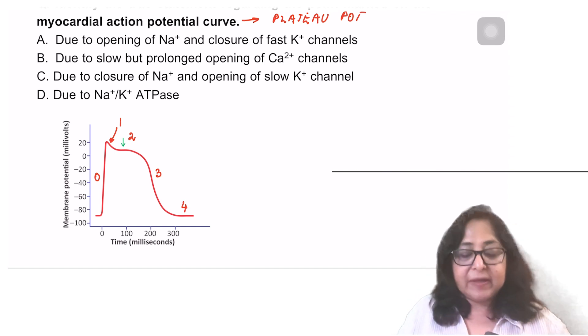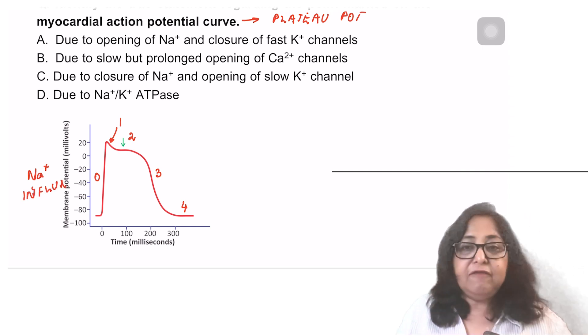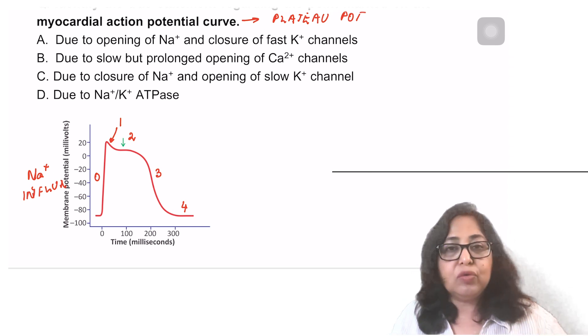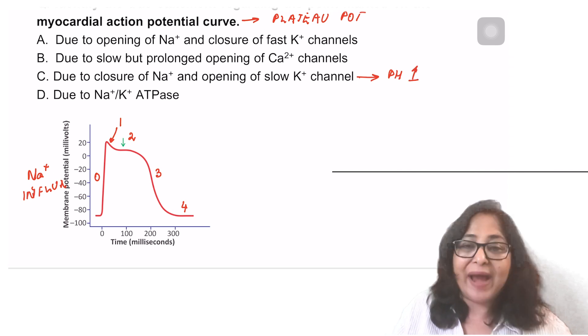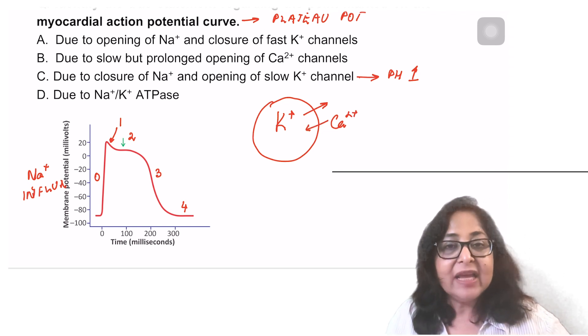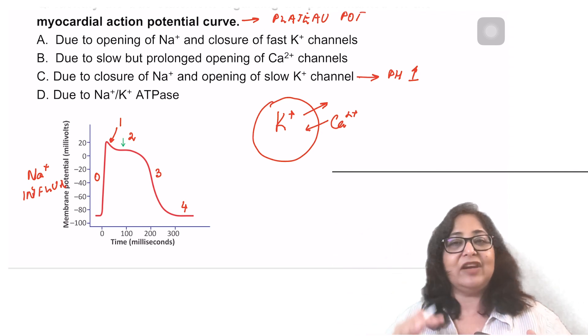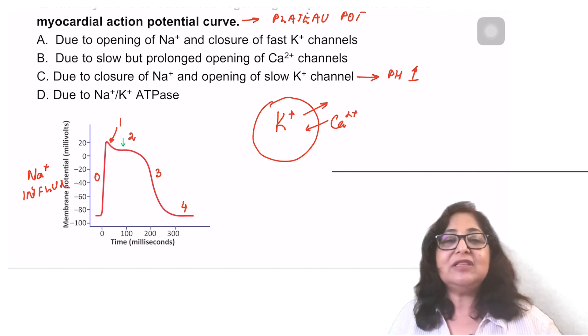The upstroke is because of a sodium influx. Phase 1, which is the early repolarization phase, is due to closure of sodium and opening of potassium channels. So option C is actually responsible for phase 1. Then you have phase 2. What happens in phase 2 is potassium leaves the cell and calcium starts entering the cell via slow calcium channels, which are sometimes also known as slow sodium calcium channels.